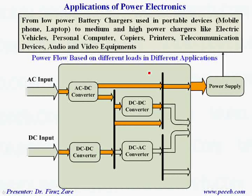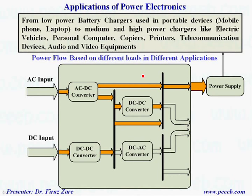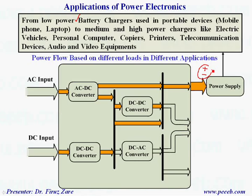Now let's concentrate on different applications and see how we can provide, for example, DC supply — how we can provide adjustable constant DC voltage to have a power supply suitable for different applications, like battery chargers for portable devices, or high or medium power devices, charger for electric vehicles, personal computers, and other commercial systems. The point is that the output should be DC, either adjustable or regulated.